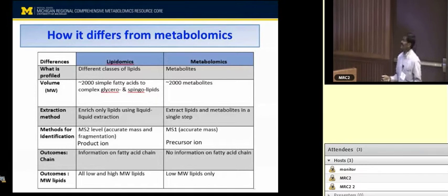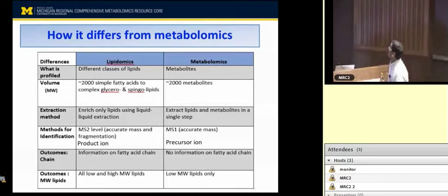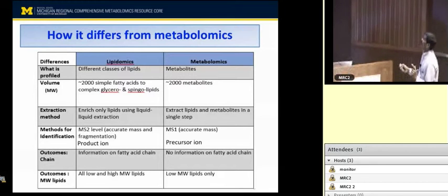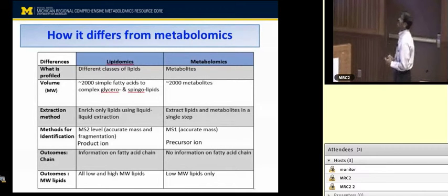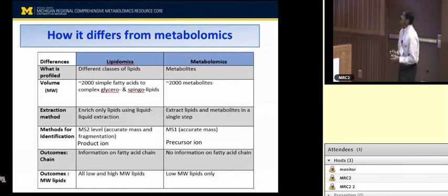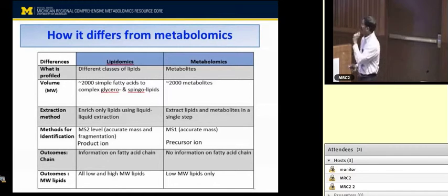This is the structural diversity of commonly analyzed lipids. The key differences between classes: glycerolipids and phosphoglycerolipids contain a glycerol backbone. Phosphoglycerolipids and sphingolipids contain polar head groups, whereas glycerolipids do not. In glycerolipids and phosphoglycerolipids, the fatty acid is linked through an ester bond. Whereas in sphingolipids, the fatty acid is linked through an amide bond. This is very important for detecting these classes of lipids using mass spectrometry.